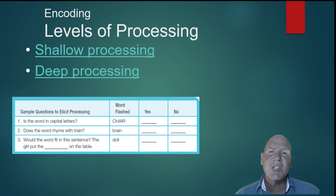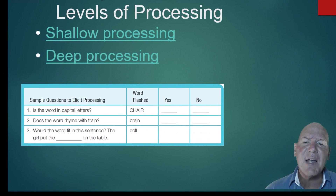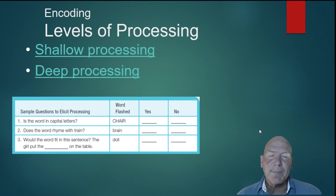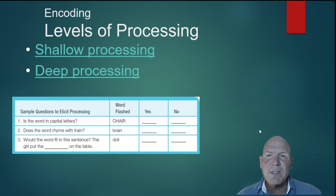There are also levels of processing. Shallow processing is when we don't give a lot of meaning to something. Deep processing is when we give meaning. For example, with the word CHAIRS: just seeing it in capital letters is visual encoding — that's shallow processing. 'Does it rhyme with train?' is acoustic processing — still not deep. But if we look at whether the word fits in the sentence 'The girl put the blank on the table,' you're giving it meaning. We call that semantic learning. When something has meaning, it's easier for your brain to create associations.